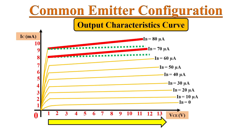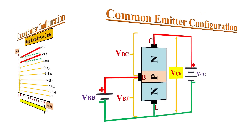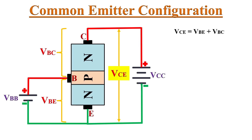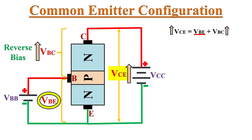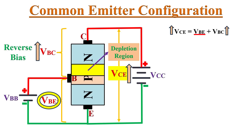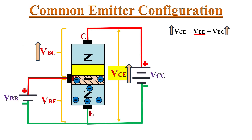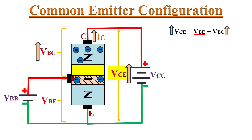The reason the collector curves are not perfectly horizontal: since VCE equals VBE plus VBC, if we keep VBE fixed and increase VCE, then VBC increases, meaning the reverse bias between base and collector increases. This creates a thicker depletion region at the base-collector junction, which keeps increasing as reverse bias VBC increases. Due to this, the effective base width reduces. Because of this reduced base width, the probability of recombination in the base region reduces, and most electrons get collected at the collector region. Hence, as VCE increases, collector current IC also increases.